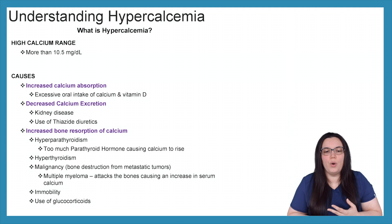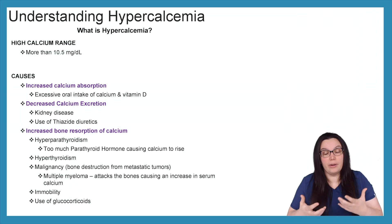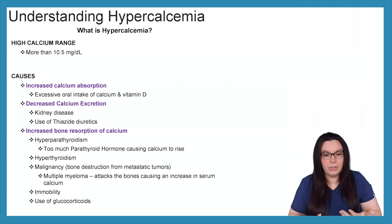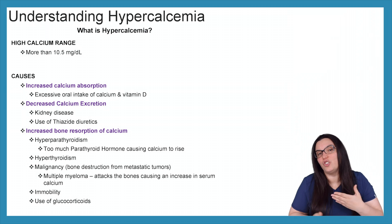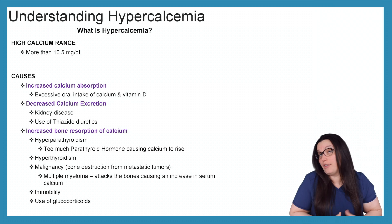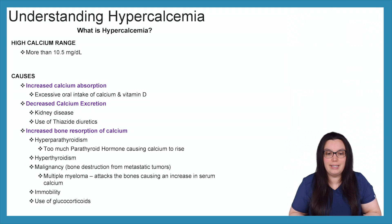We can have an increase in bone reabsorption of calcium. With hyperparathyroidism, we have too much parathyroid hormone causing calcium to rise. We have hyperthyroidism. Malignancy can cause bone destruction from metastatic tumors. Also, multiple myeloma attacks the bones causing an increase in serum calcium levels. Immobility is a huge one — if you're immobile, you're going to be either hypocalcemic or hypercalcemic depending on how severe the immobility is, as well as excessive use of glucocorticoid steroids.